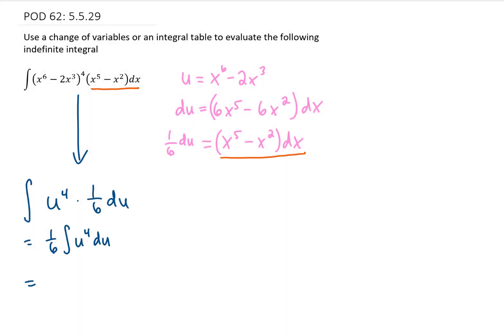Now we can integrate this using the power rule. We can raise the power on u by one to give us u to the fifth power. We're then going to divide that term by that five. We're going to add an arbitrary constant on there, and we're almost finished. This one-sixth times one-fifth gives us a one-thirtieth outside.